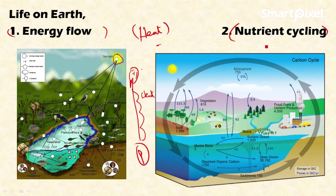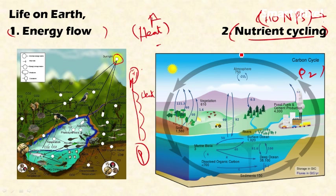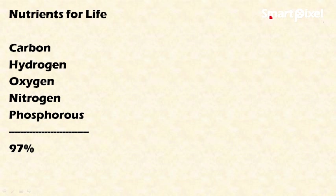In nutrient cycling, nutrients like carbon, hydrogen, oxygen, nitrogen, phosphorus, and sulfur continuously cycle without being lost. They repeatedly move through both biotic and abiotic components of the ecosystem. For example, the oxygen we breathe today might have been used by our ancestors thousands of years ago and will be used by future generations without modification. Unlike energy flow, nutrients are recycled again and again without any loss.